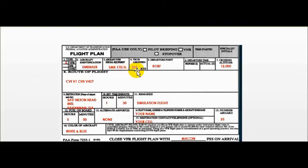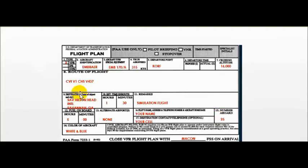The aircraft is the Embraer 170 slash Alpha — suffix A is our special equipment. True airspeed will be 315 knots. Departure point is KORF. Cruising altitude is 16,000 feet. Our route of flight is CVI VOR — Coalfield VOR, frequency 114.6 — then Victor 1 to Charleston VOR, then Victor 437.